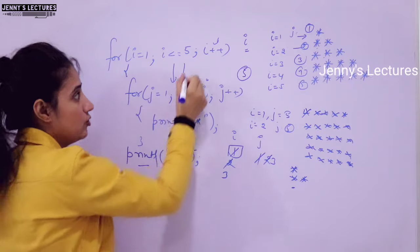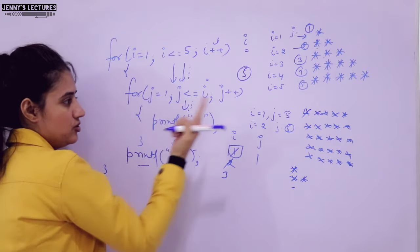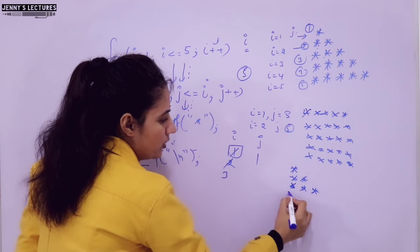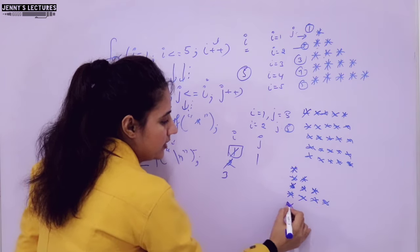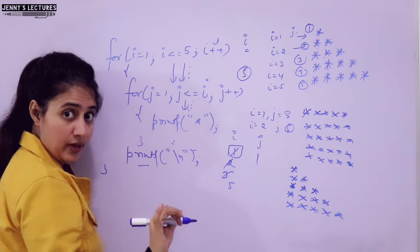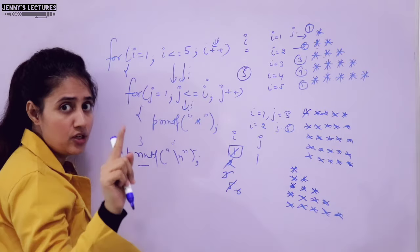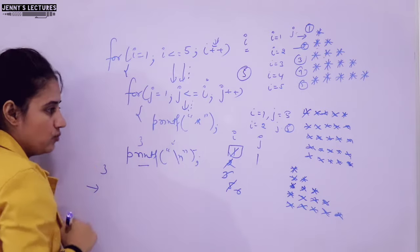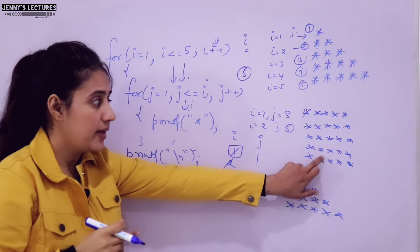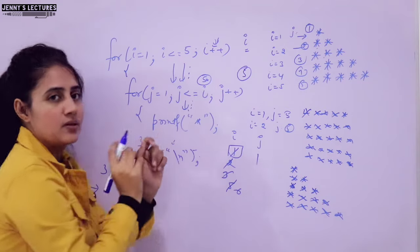3 less than equal to 5 - condition true, enter again. j is re-initialized to 1, condition is checked again, and this repeats. In this line 3 stars are printed, then 4 stars, then 5 stars when i becomes 5. Finally, i plus plus makes i become 6. 6 less than equal to 5 - condition not true, so control goes out of the outer for loop and this triangle pattern is printed. The only change from the previous program is writing j less than equal to i instead of j less than equal to 5.